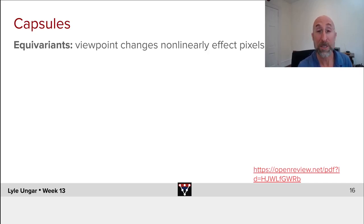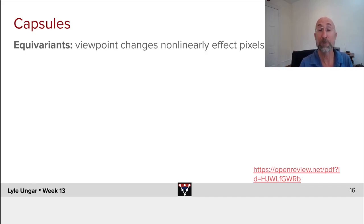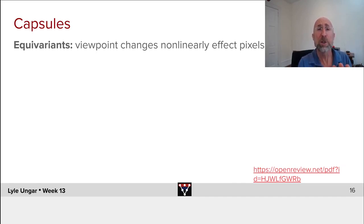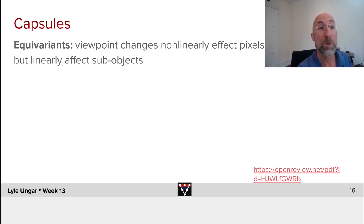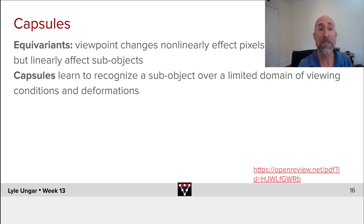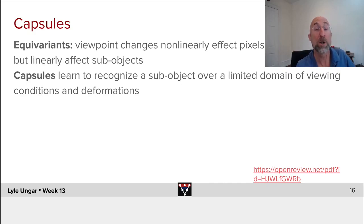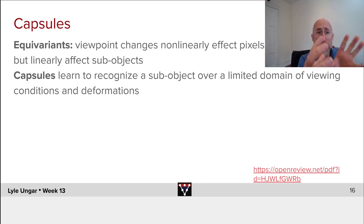The key idea is equivariance — not invariance, where things are exactly the same everywhere, but equivariance. If you change the direction at which you're looking at something, there's a non-linear change in the pixels, but there can be a linear change in what sub-object you're looking at: an eye, a nose, a mouth, a car wheel — there's some fairly simple variance under the hood. The idea behind a capsule is to recognize one particular sub-object, like the tip of a screwdriver or a finger, and note that within some limited range of angles, you have a little module — like a filter in a CNN — that recognizes that piece.